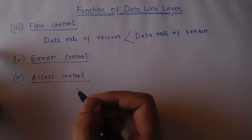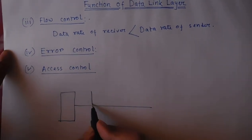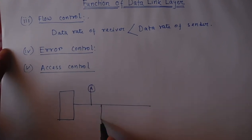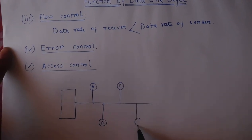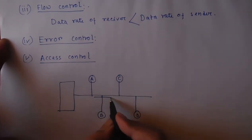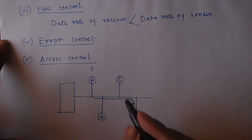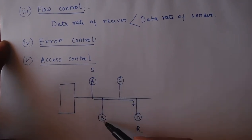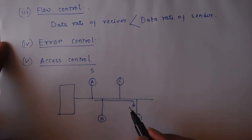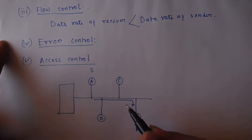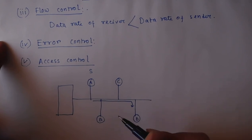The next function is access control. If multiple devices — say A, B, C, D — share a link, and device A sends data to D while device C also wants to send data to B at the same time, then C must wait until the link is free. It is necessary to determine which device has control over the link at any given time. This is called access control.